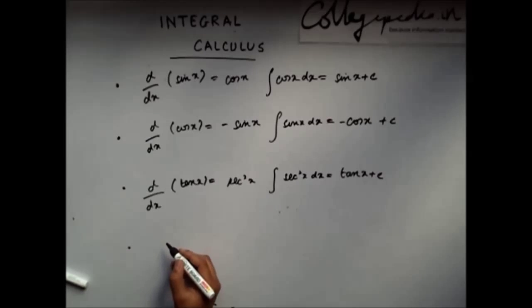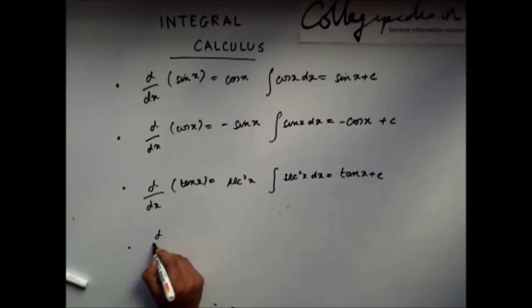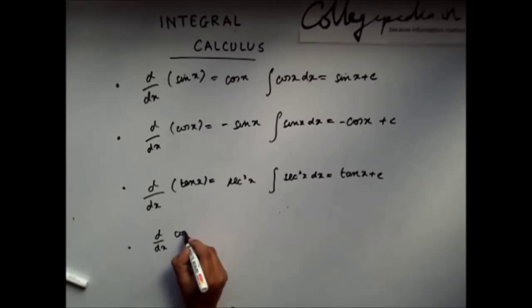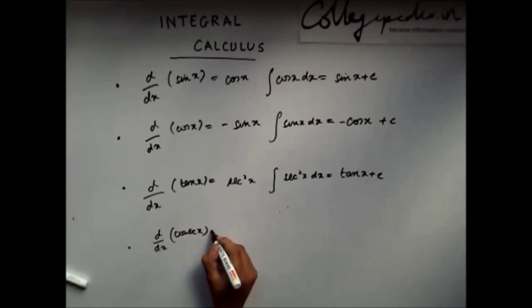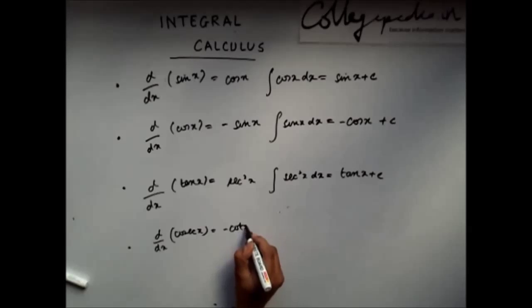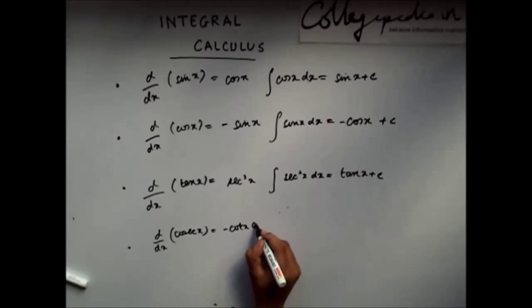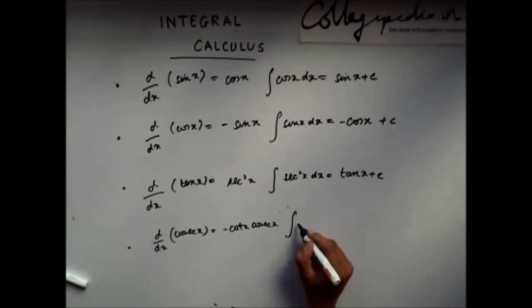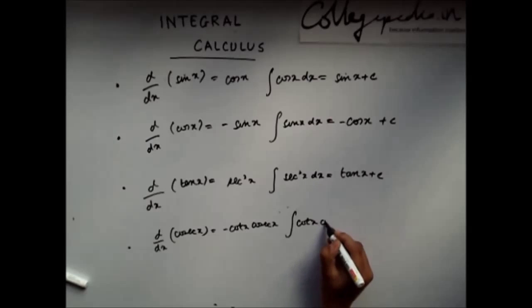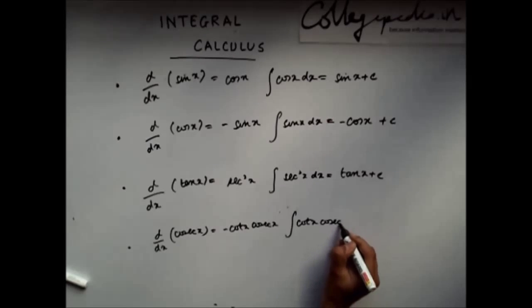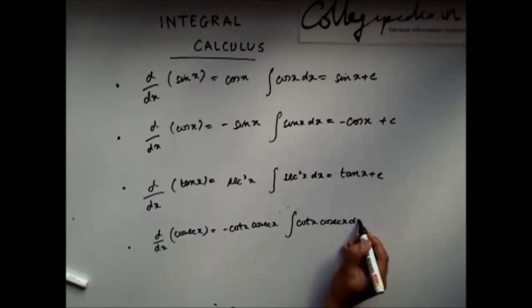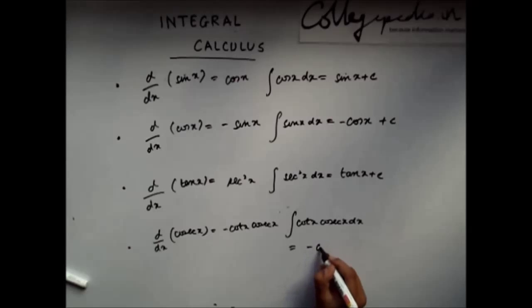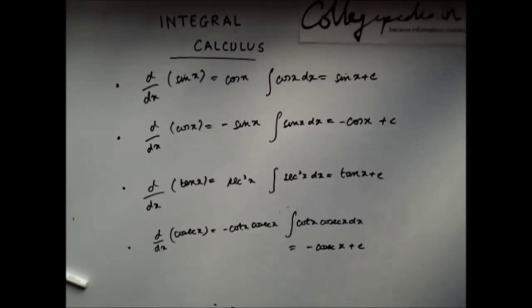Similarly, you know that the derivative of cosec x is minus cosec x cot x. So, if I integrate cosec x cot x dx, I will get minus cosec x plus C.